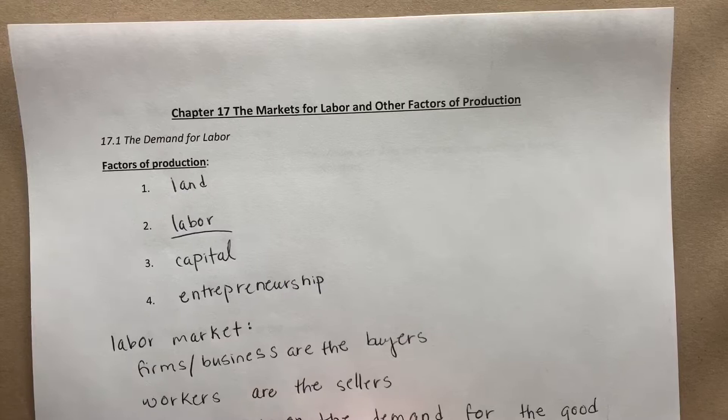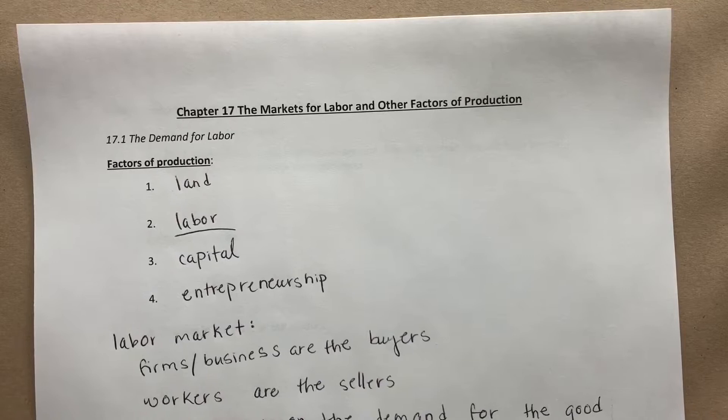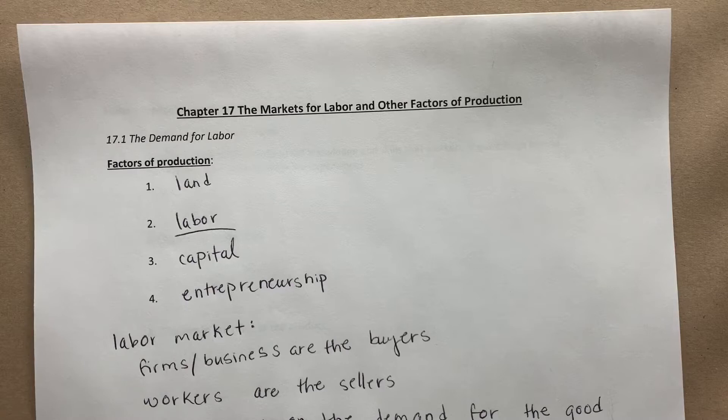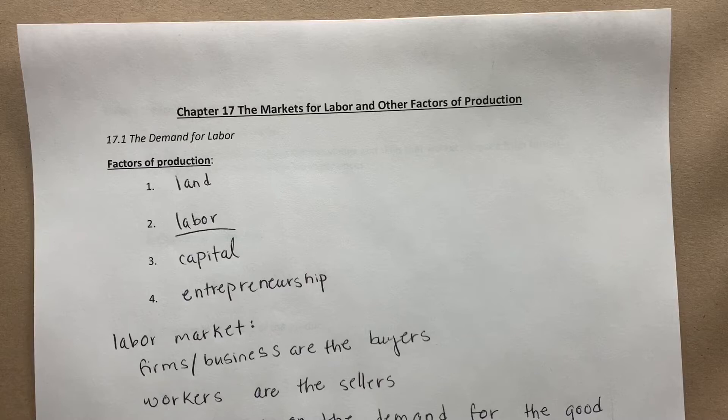Derived demand depends on the demand for the good the factor produces. So for land, labor, capital, and entrepreneurship — in Apple's case, the demand for workers depends on how many more iPhones they're able to produce if they hire an additional worker, and also the additional revenue they're going to be receiving from selling those additional iPhones.